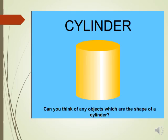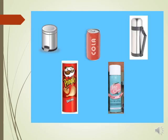Now we have the cylinder. Can you think of any objects that are the shape of a cylinder? Yes — Pringles cans, hairspray, water bottles, trash cans, and Pepsi cola cans.